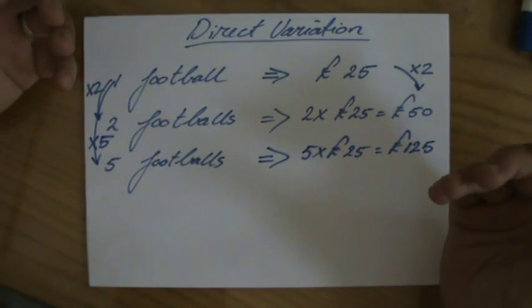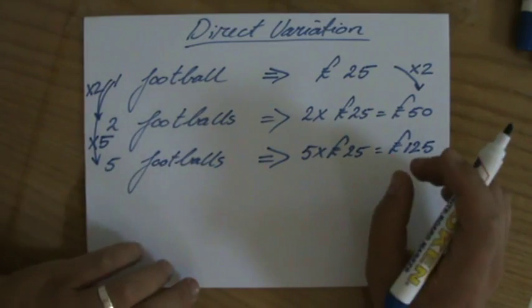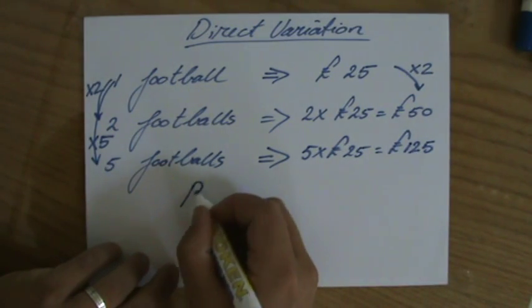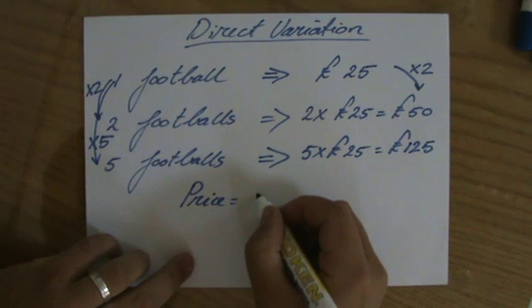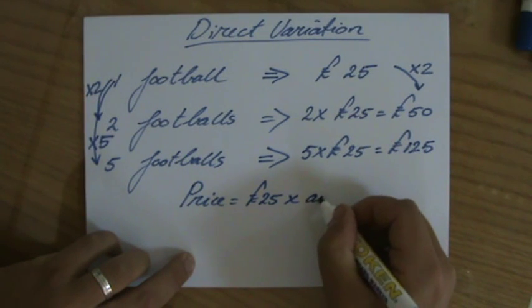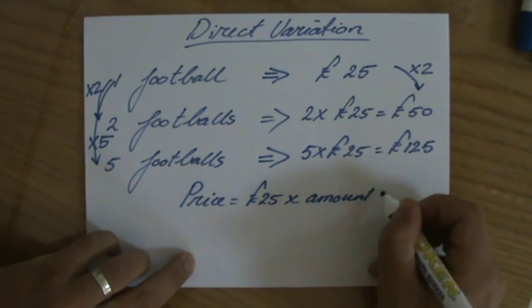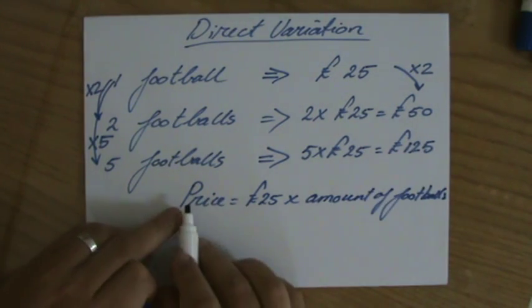If I would construct an equation of this situation, we could say the price you have to pay is going to be 25 pounds times the amount of footballs. So the price I have to pay is 25 times the amount of footballs I buy.